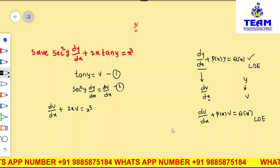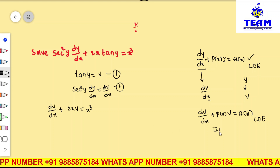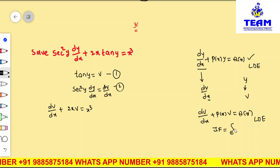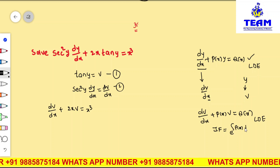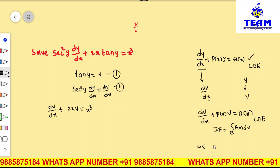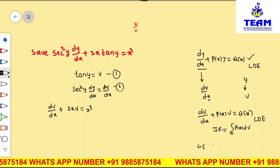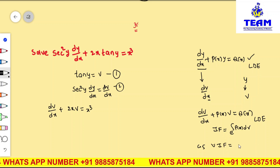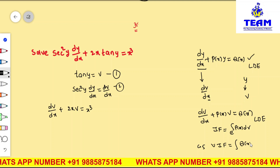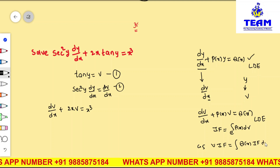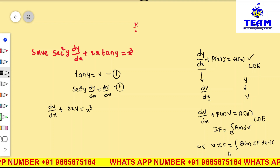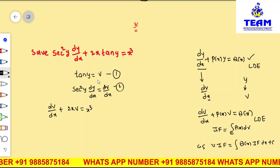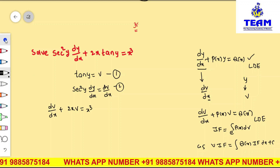Since this equation is non-exact, we multiply by an integrating factor. The integrating factor is e^(∫P(x)dx), and the general solution is v · (integrating factor) = ∫Q(x) · (integrating factor) dx + C. After getting the solution, we replace v by tan(y).